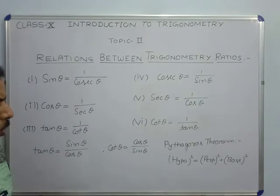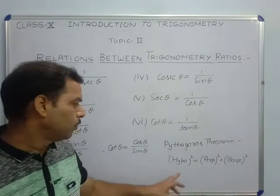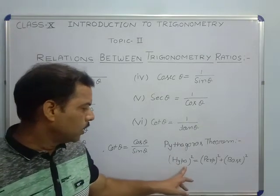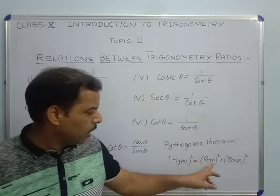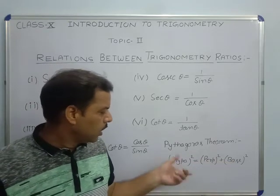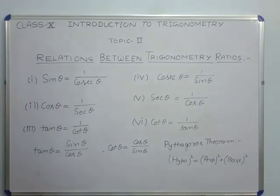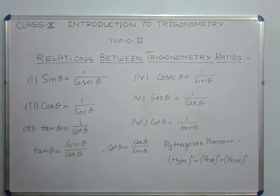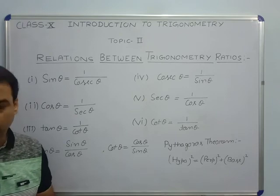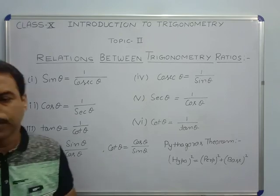As you know about the Pythagorean theorem: hypotenuse square equal to perpendicular square plus base square. We will use this theorem, and all these relations and trigonometry ratios, in exercise 8.1 of trigonometry.